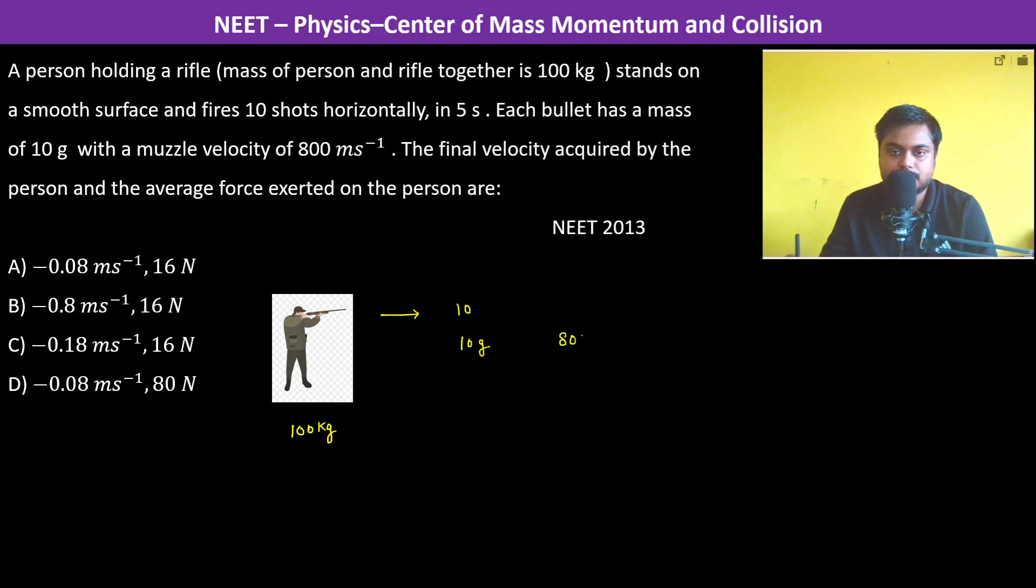Therefore, in this direction, the momentum gained is 10 into 10 grams, which is 10 by 1000 kg, into 800 meters per second.